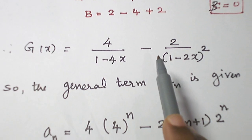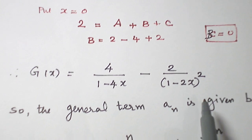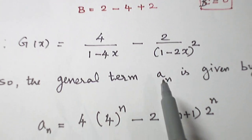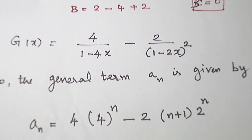A/(1-4x). B is 0. Leave it. C/(1-2x)^2. And from this, you write the general term. Refer my tips to generating function video again.